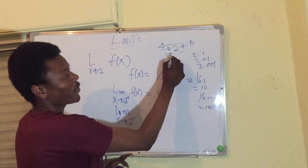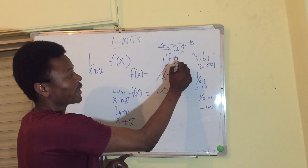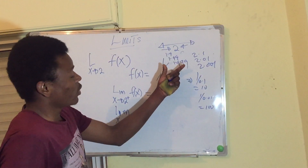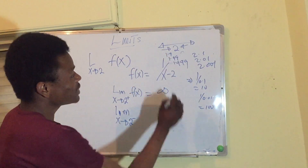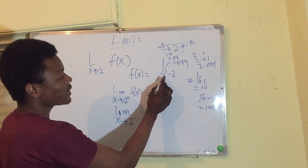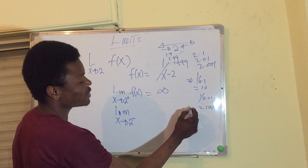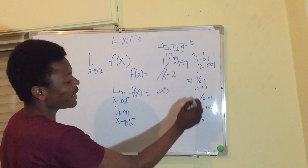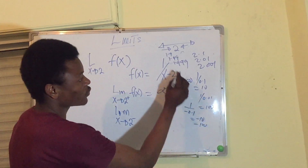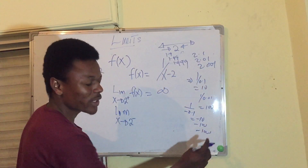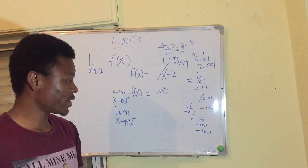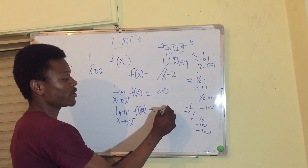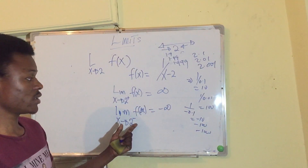From the negative direction: 1.9 gives x−2 = −0.1, so 1/(−0.1) = −10. Then 1.999 gives −100, and 1.9999 gives −1000. So we get larger and larger negative numbers. We can conclude that the function approaches negative infinity from this direction.